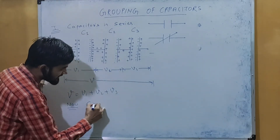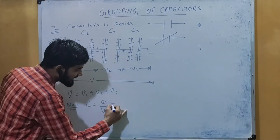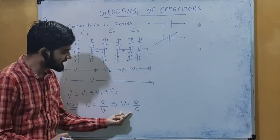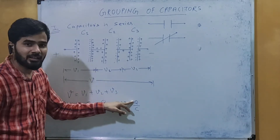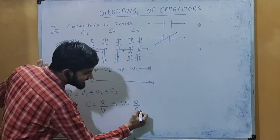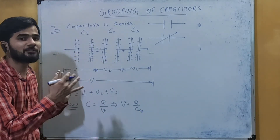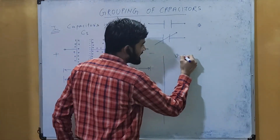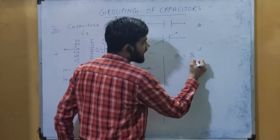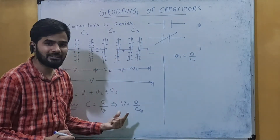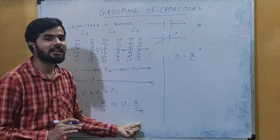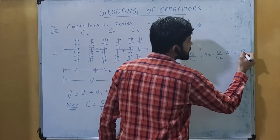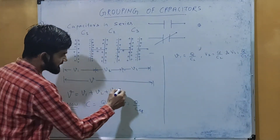We have the capacitance formula C = Q/V, so V = Q/C. Here V is the total potential applied, Q is the total charge, and C is the equivalent capacitance of the system. Similarly, V1 = Q/C1 — the charge Q remains the same but the capacitance and potential differ for each capacitor. Also, V2 = Q/C2 and V3 = Q/C3.